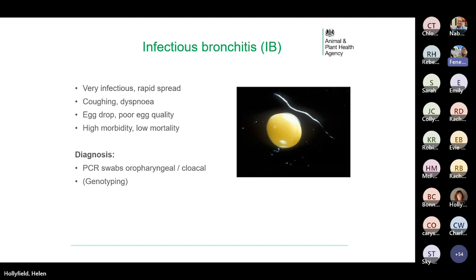In commercial flocks a live vaccine is used, so if the PCR result comes back positive, samples are sent for genotyping to assess the percent similarity to the vaccine strain and to get an indication of what strains of IB are circulating.